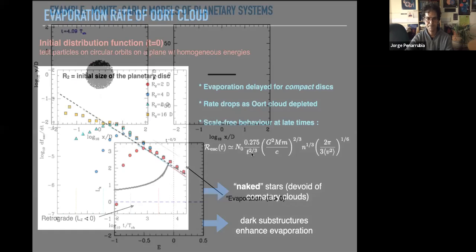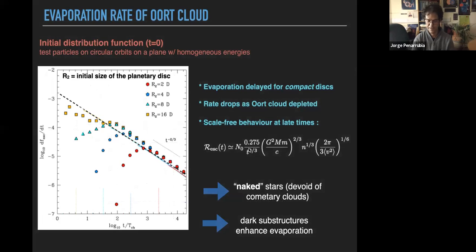With this theory you can compute the escape rate, connecting it to the mass and sizes of the perturbers. This predicts that some stars will be naked — void of cometary clouds if they are embedded in clumpy media. Dark substructure will enhance evaporation. We might hope to use cometary clouds around planetary systems to put constraints on dark substructure as well in the future.